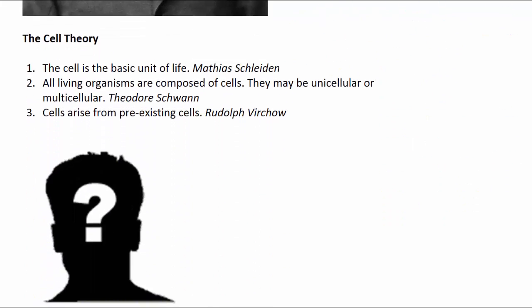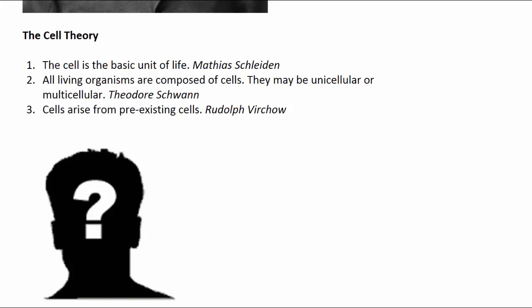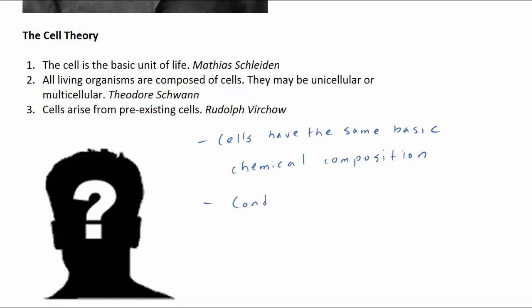Since the discovery of DNA structure and function in the 1950s, the cell theory has focused on the role of genetic information in dictating what happens inside cells. The modern cell theory includes the ideas that cells have the same basic chemical composition, use energy, and contain DNA that is duplicated and passed on as each cell divides. So in reality, this theory has not been finalized yet and could be further developed by our biology students.